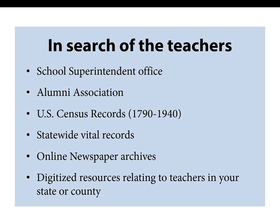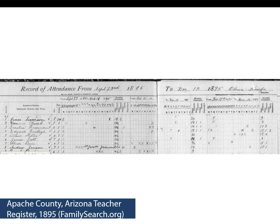Consider tracking down teachers your ancestors had. Teachers may have kept diaries of their school years, scrapbooks of class photos with identifications written down, or other records. The superintendent of schools in your ancestor's community may know where former teachers are or when they passed away. There may also be an alumni association for the town. Teacher registers exist — for example, an 1895 register from Apache County, Arizona listing teachers and the dates they worked.